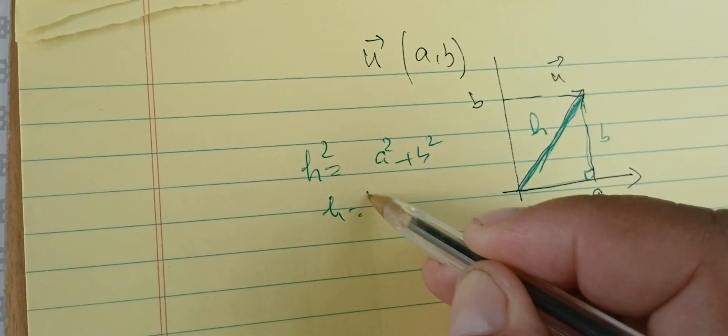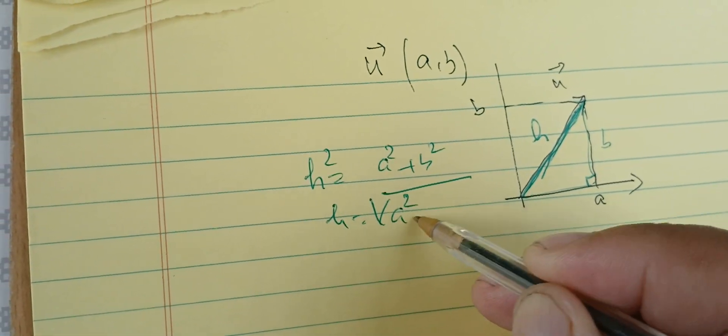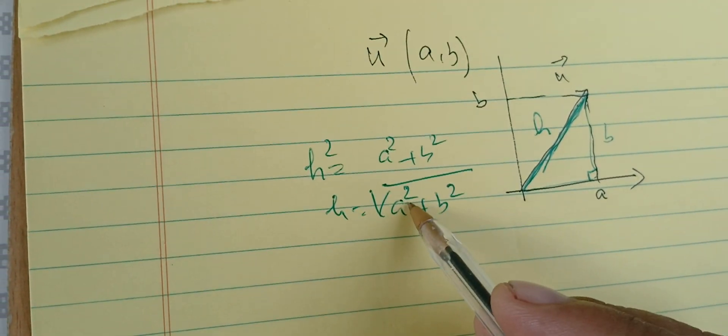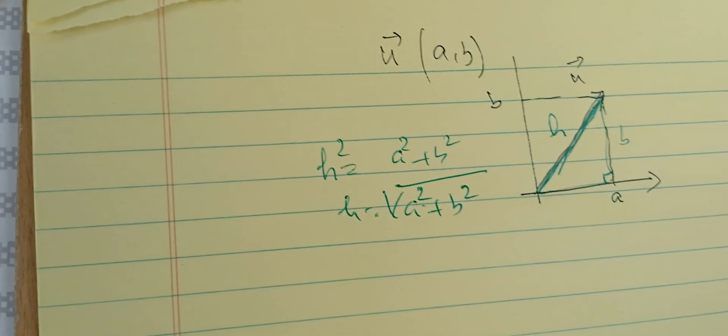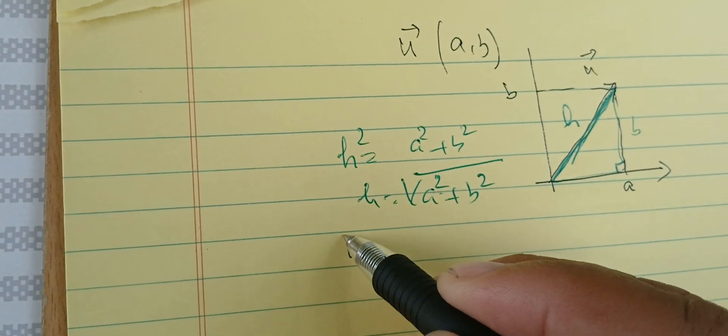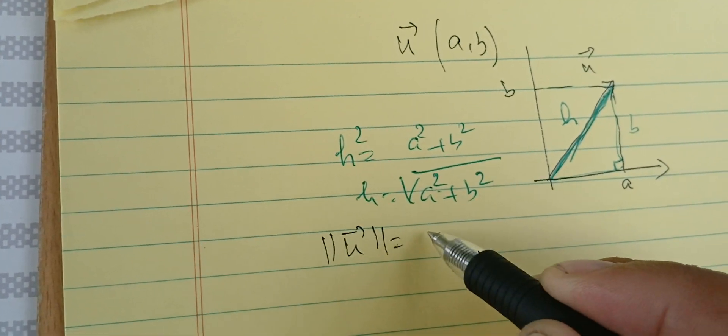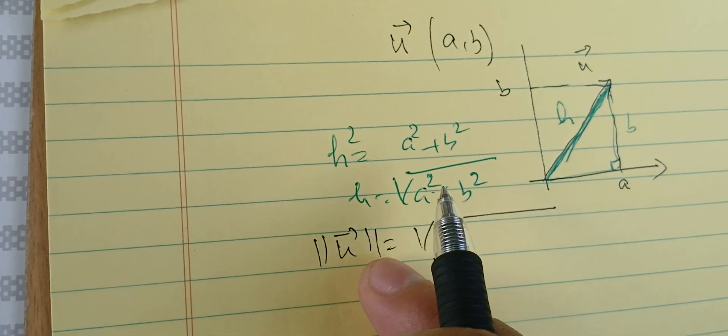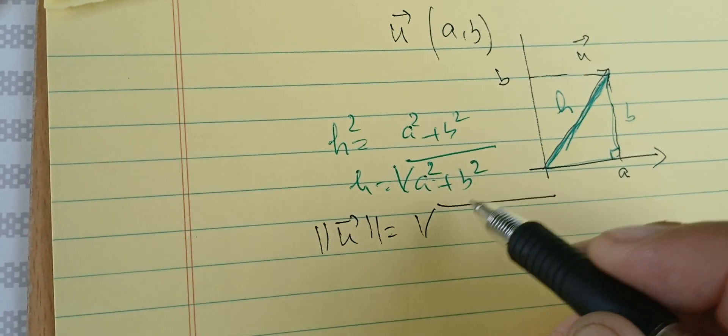I denote it by this notation ||u||. This means the length, or what we call the norm, of the vector u.